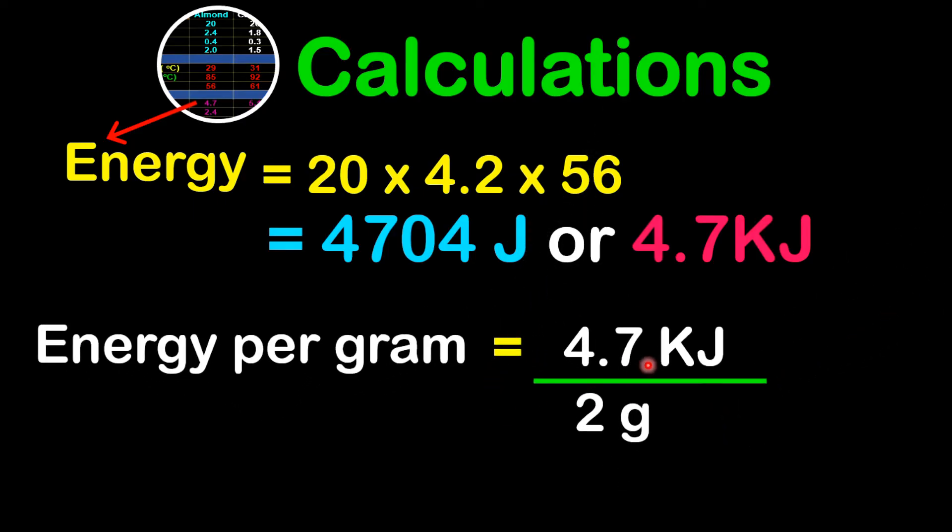For the energy per gram, which will be the total energy divided by the burnt mass, which in this case is 2 grams. This gives us 2.35 kilojoules per gram.